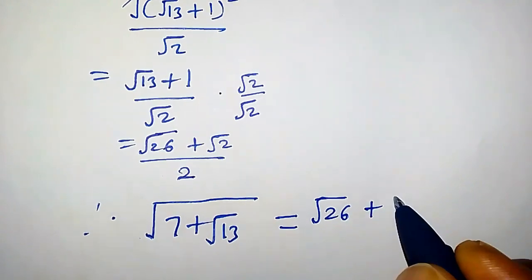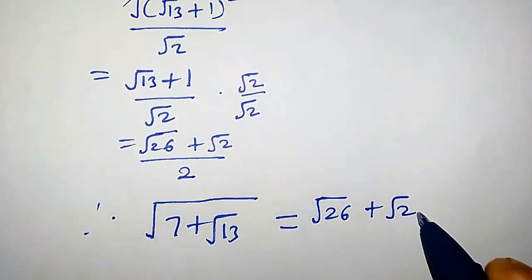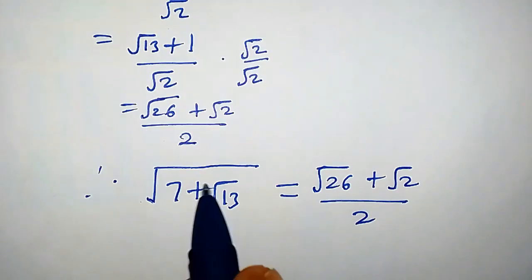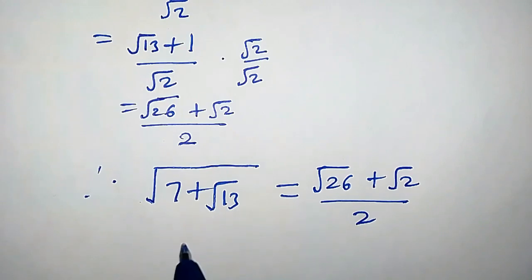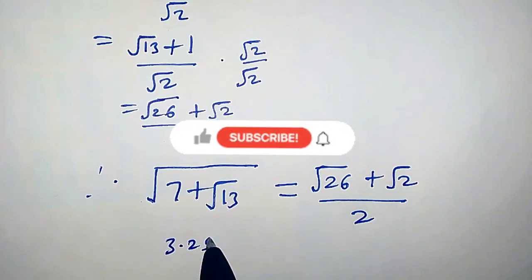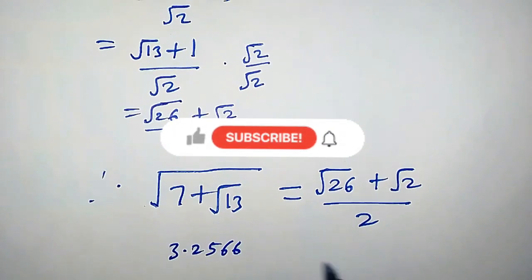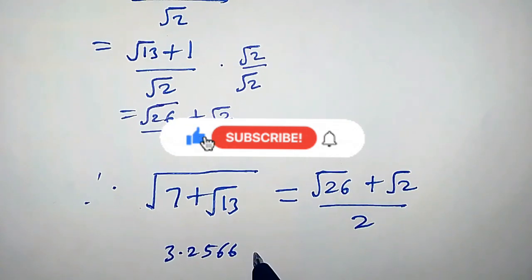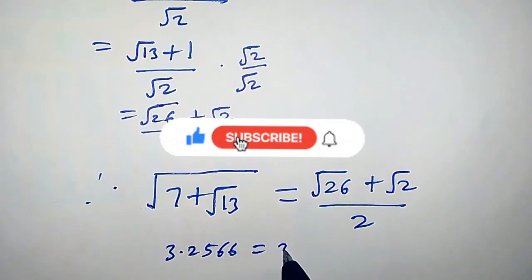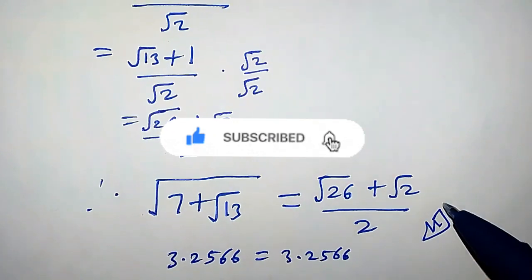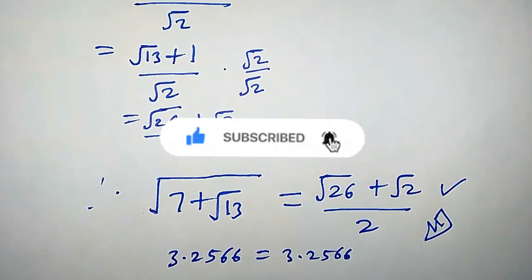Therefore, √7 + √13 equals (√26 + √2) over 2. If you plug the left-hand side into your calculator you get 3.2566, and likewise the right-hand side also gives 3.2566. So this is the required solution. Thanks for watching.